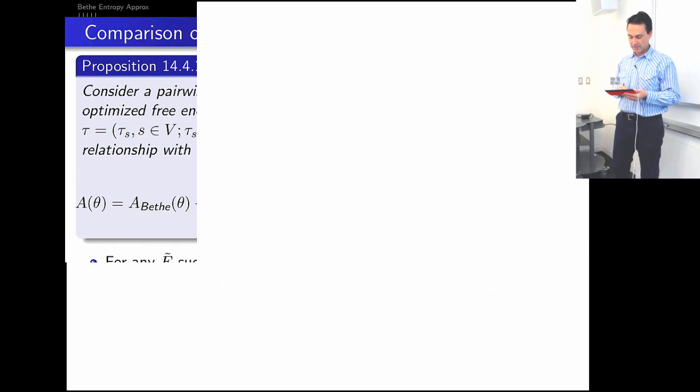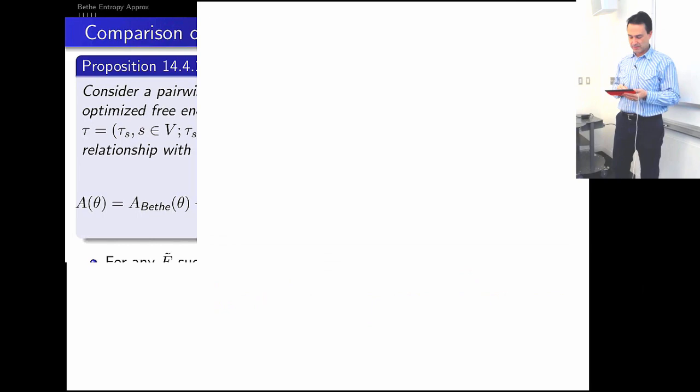The whole correction expression is really summing over all generalized loops. So: true log partition function equals the beta approximation plus log(1 + sum over all generalized loops of a correction factor). This correction factor accounts for the gap between the beta approximation and the true log partition function.